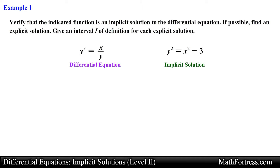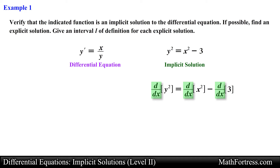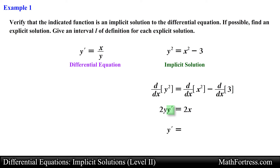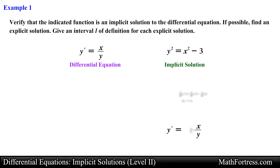Let's first verify this implicit solution by taking the derivative of this function implicitly with respect to x. Carrying out the differentiation and applying the chain rule along with the power rule, we obtain the following expression. Next it's just a matter of solving for the derivative y', and doing that we obtain the following expression. Simplifying, we see that the derivative is equal to x over y. The next step is to verify that the left hand side of the differential equation equals the right hand side.